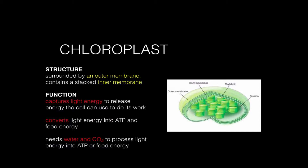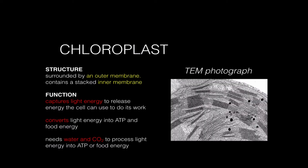Just like with the mitochondria, a chloroplast is converting one energy into another kind of energy. In this case, a chloroplast is converting light energy into ATP energy and food energy. In order to do this, it needs water and carbon dioxide. This is a transmission electron microscope photograph of an actual chloroplast, and these very fine structures are the stacks of that inner folded membrane. This is the part of the plant that's actually very bright green — this is where the chlorophyll is located. We have a pigment in here called chlorophyll, which is the pigment that plants use to capture light energy.